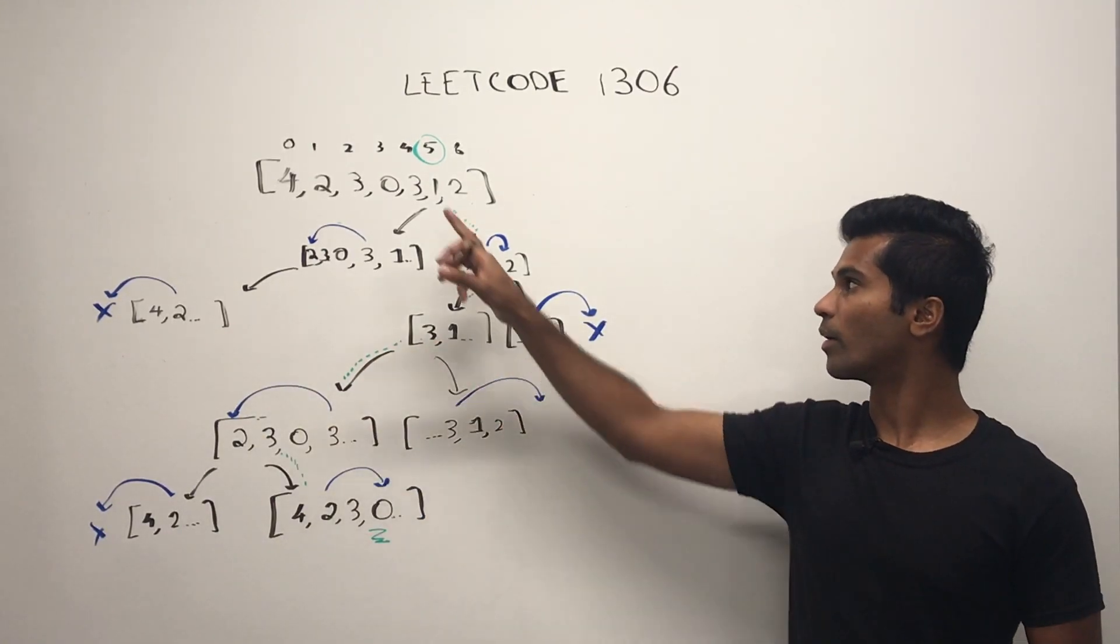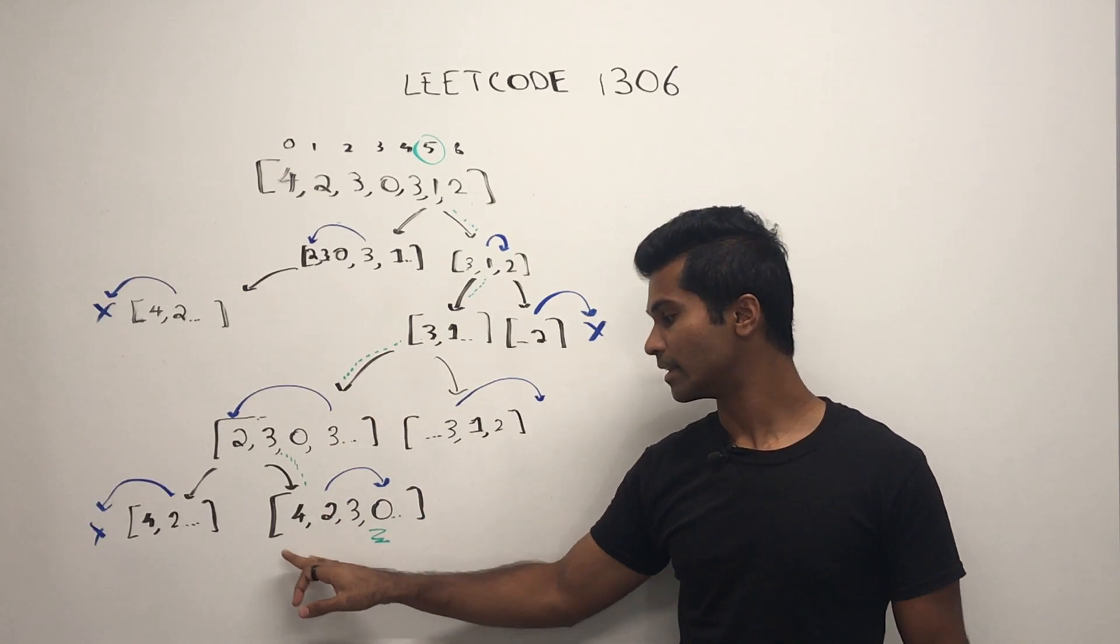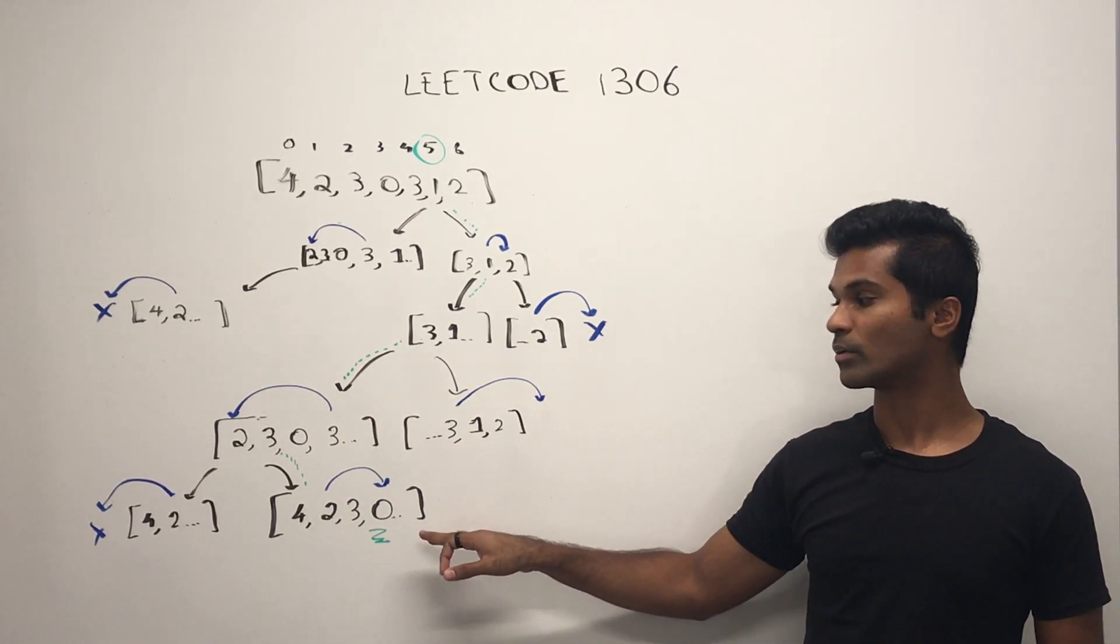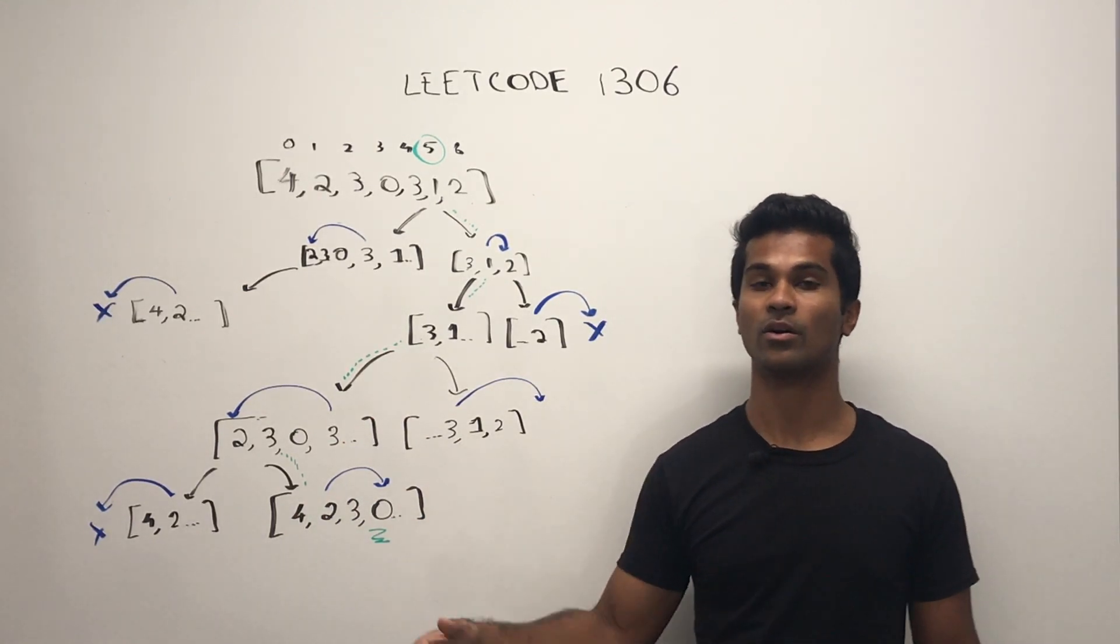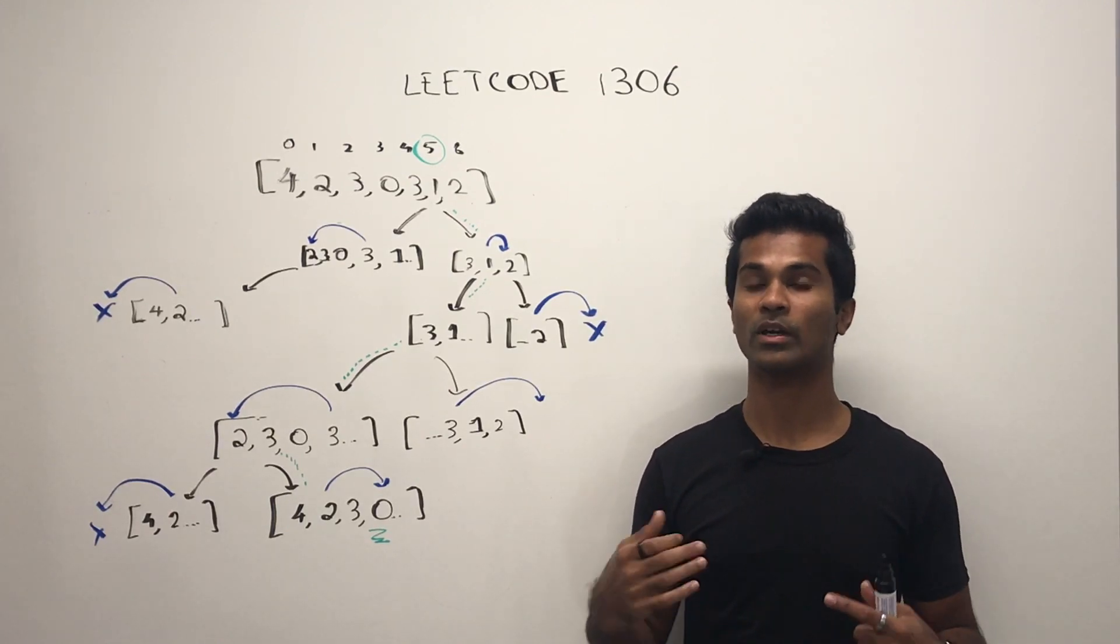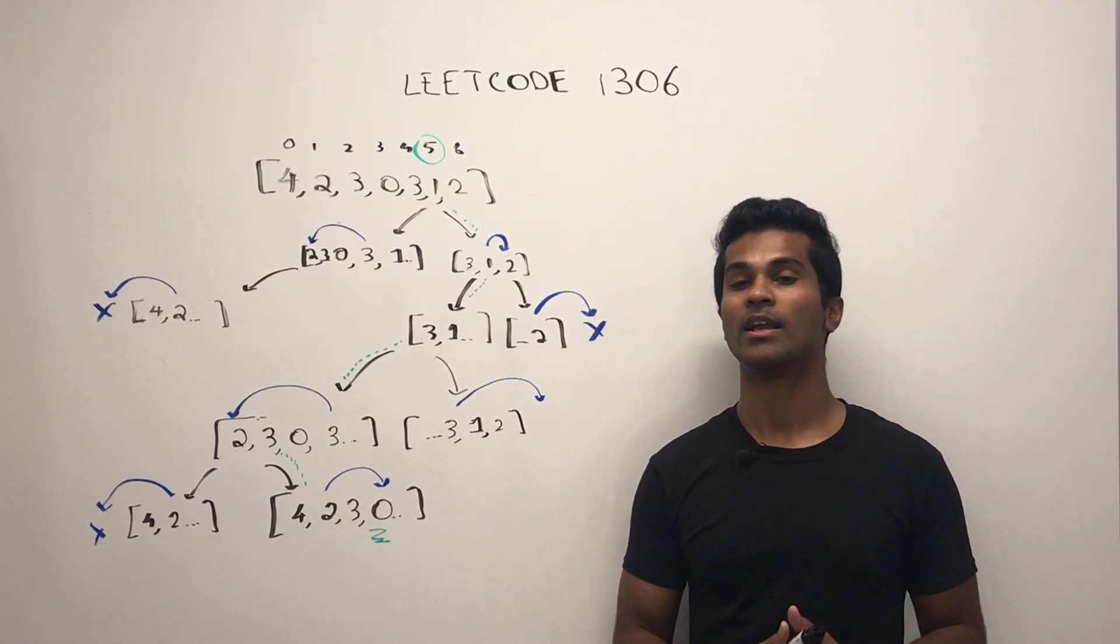So this branch and this branch are going to return false. But eventually we're going to find that there is a branch where we can reach a spot whose value is zero. So that's what we want. And even if we find one spot, we can return true for the whole question.